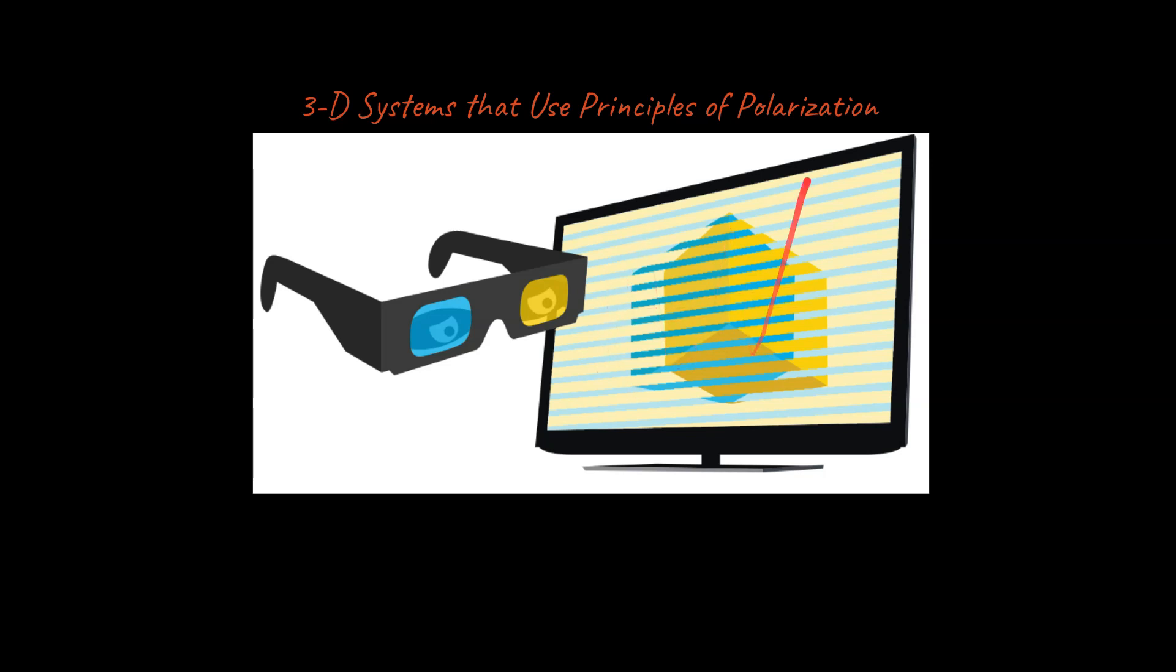And in another flash you would have something vertically polarized. And if you had alternating polarization in the glasses here, then you would be able to see with your left eye and then your right eye.